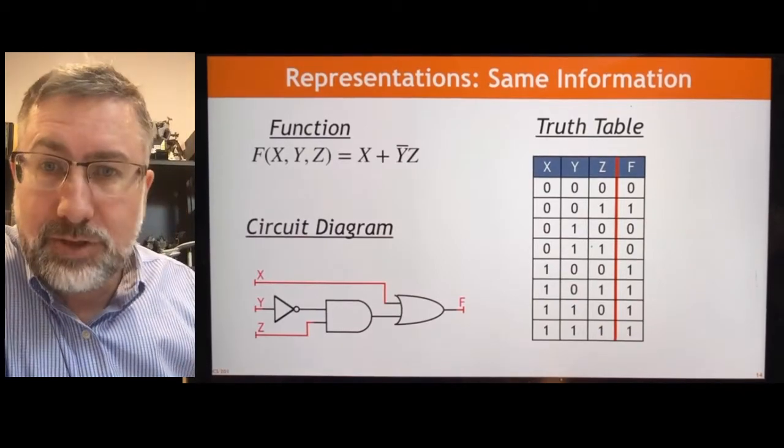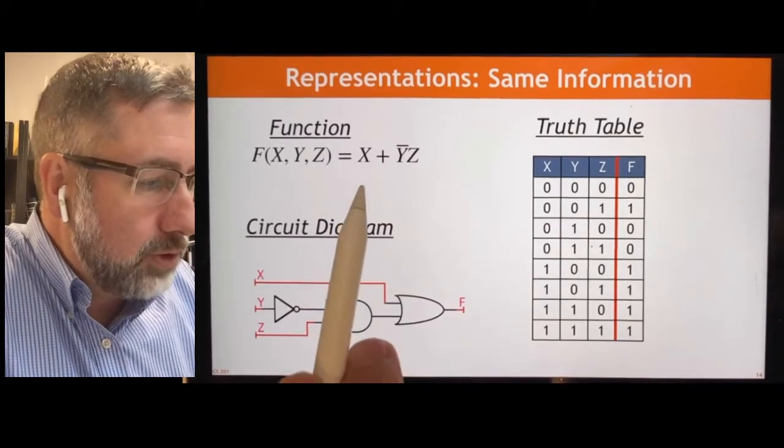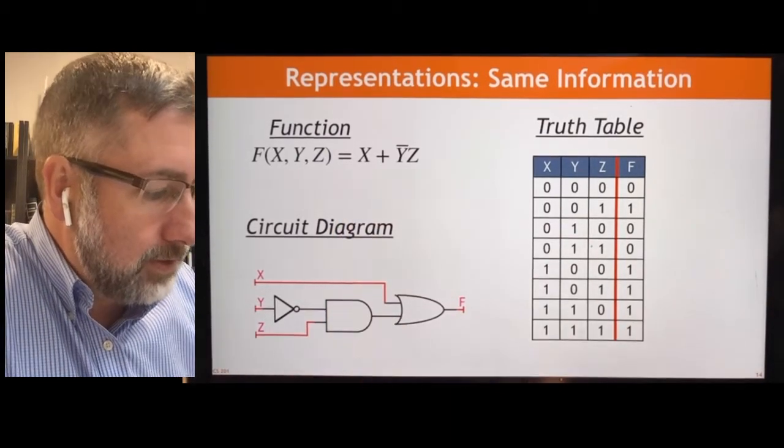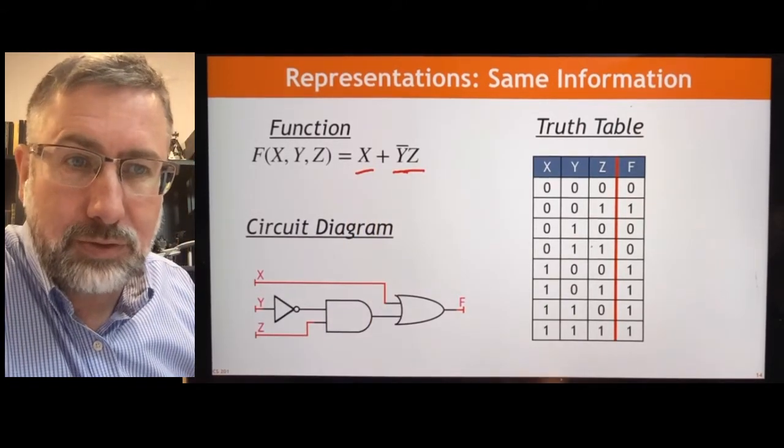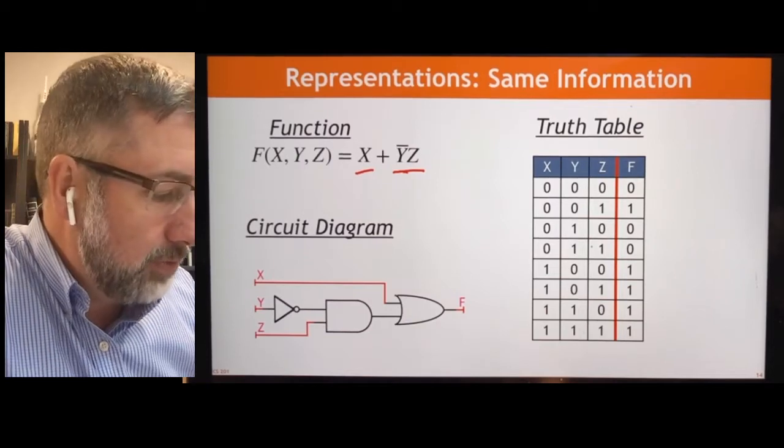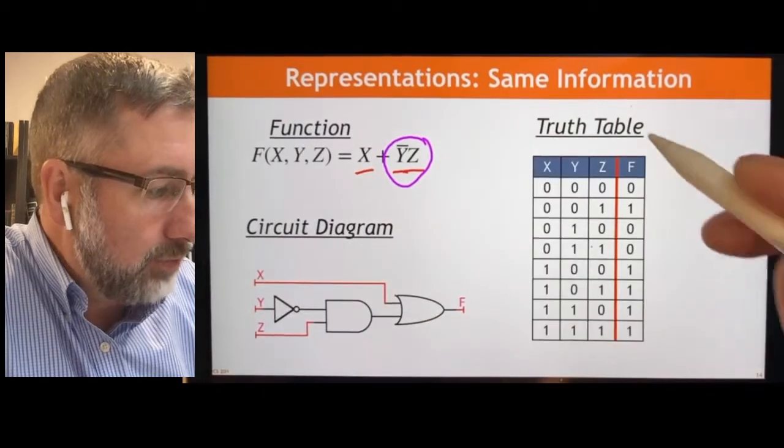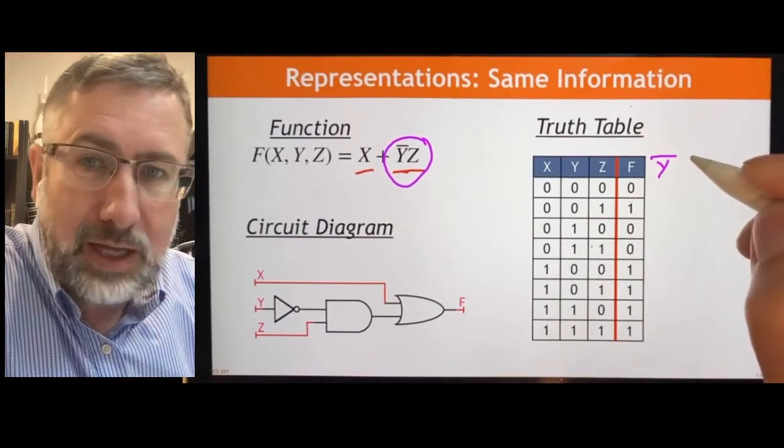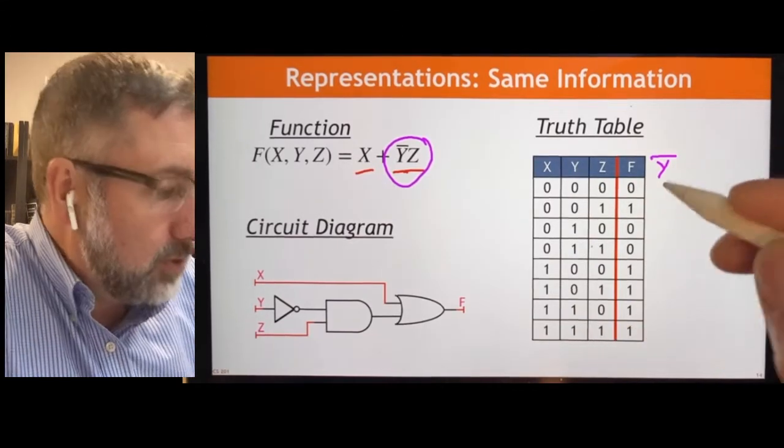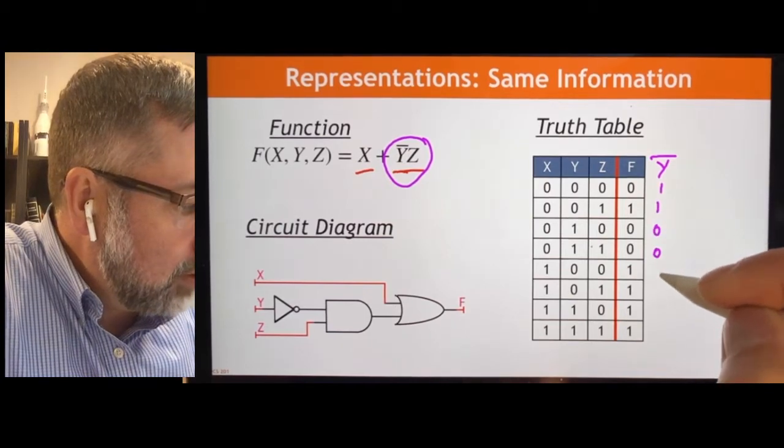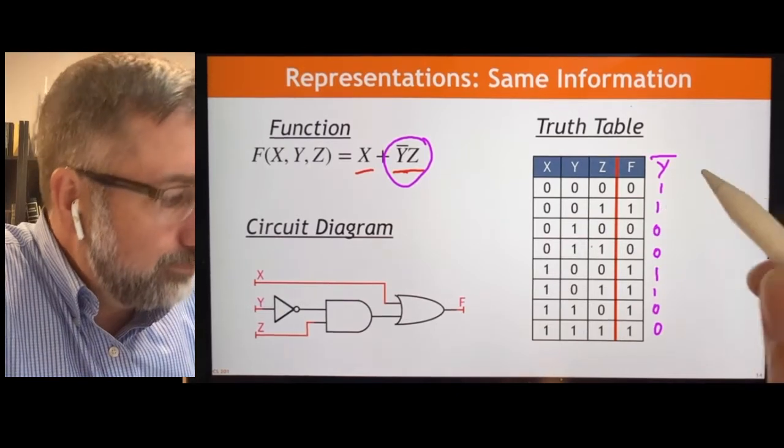So we can actually prove this to ourselves. And there's a slide later on that talks about proofs. We can prove this to ourselves by looking at the individual terms here, x and then y bar z, and showing that they are in fact equivalent to what our truth table says the function output should be. So if we look at this in this way, we can start by implementing y bar z first. And we can do that here. We can say y bar. And we'll just see what y bar is. Well, here's y down here. y bar is just the opposite. So it would be 1, 1, 0, 0, 1, 1, 0, 0. So if y is 0, y bar is 1. That's pretty straightforward.